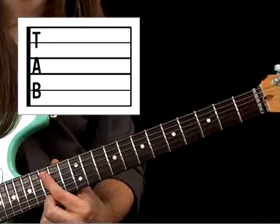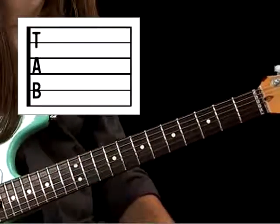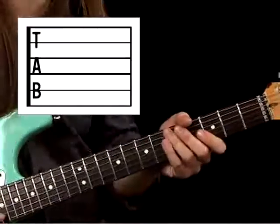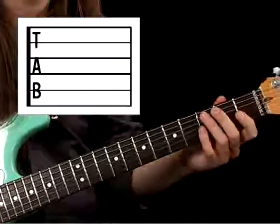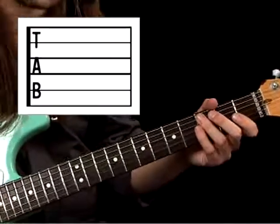So that would be our whole C major scale, and then there's going to be one more way we'll play it which is going to be an open position. Starting at the third fret again of the A string or the second to bottom line,